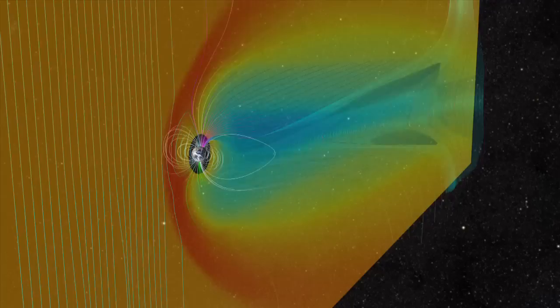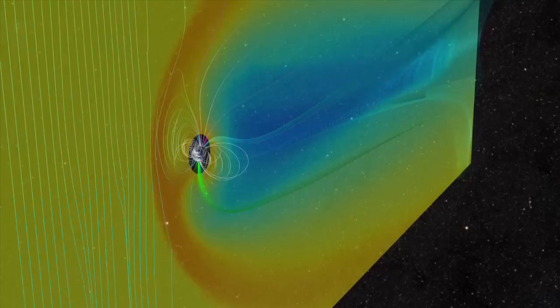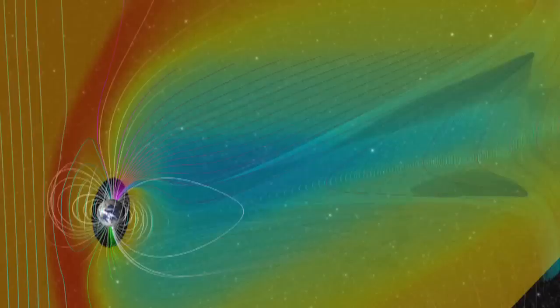distorting the planet's field and pulling it back into a windsock-type structure. The red illustrates the higher-density plasma which forms the magnetopause, the boundary between the magnetic influence of the Sun and the Earth.